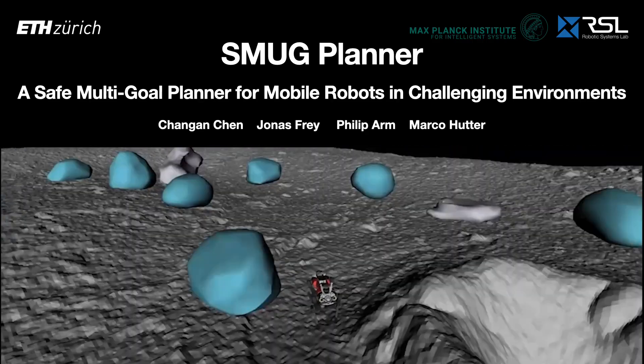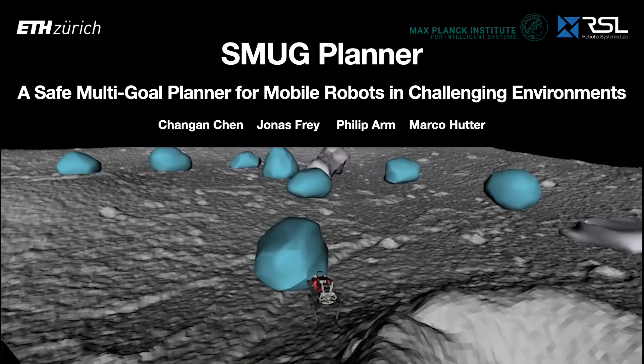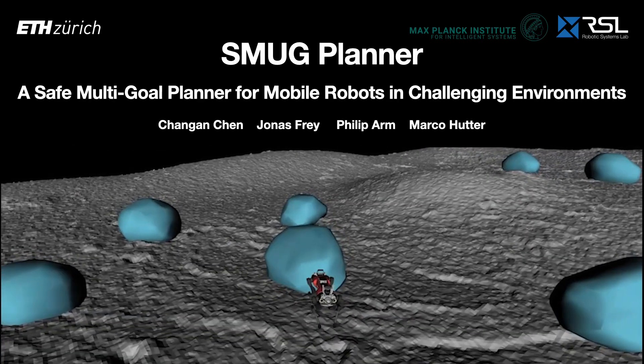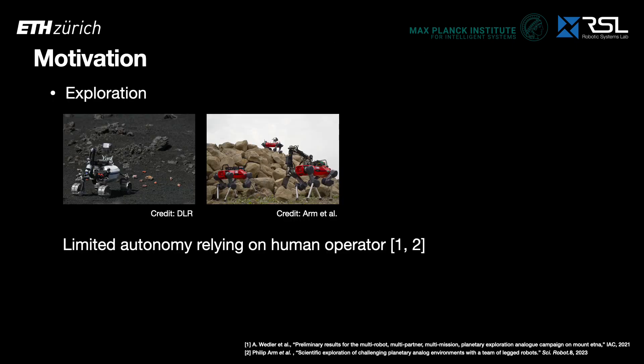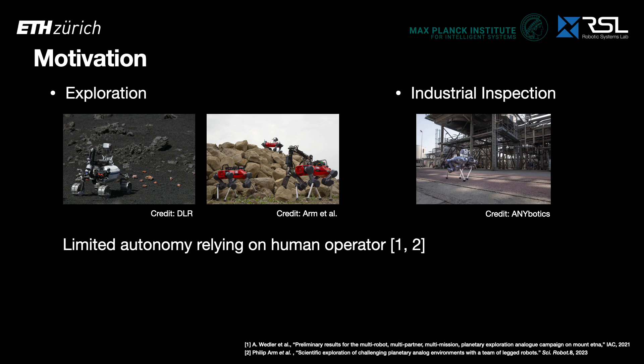We present our work SMUG Planner, a safe multi-goal planner for mobile robots in challenging environments. Multi-goal planning is commonly seen in space exploration, where robots need to visit numerous targets for detailed investigation — for example, to deploy instruments or collect samples. However, in current missions, the autonomy of the robot to navigate and plan is limited and relies on human operators. Apart from exploration missions, multi-goal navigation is also relevant for industrial inspection and monitoring tasks.